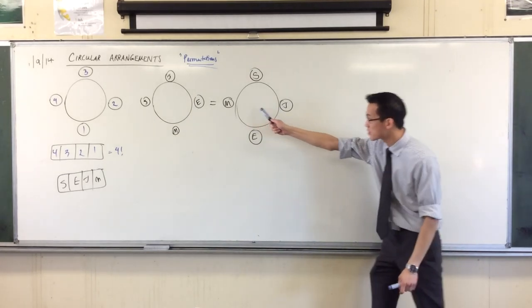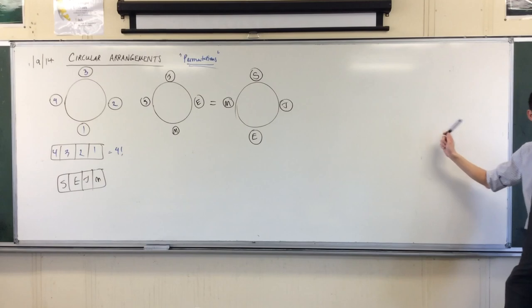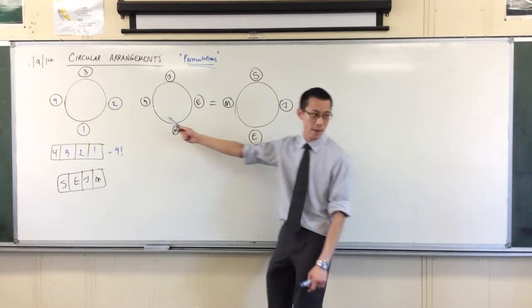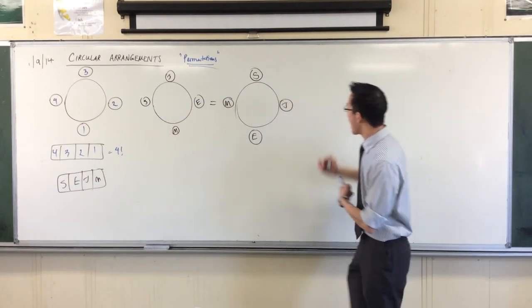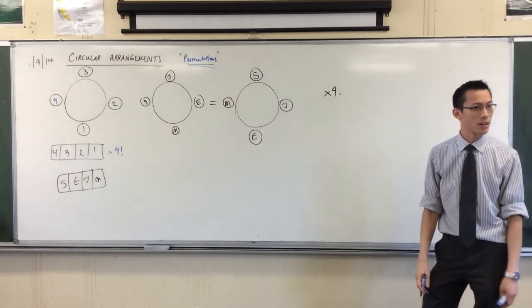Because I can rotate this once, and then twice, and then three times. When I rotate the fourth time, I'll literally be back to here. So I have four times too many.